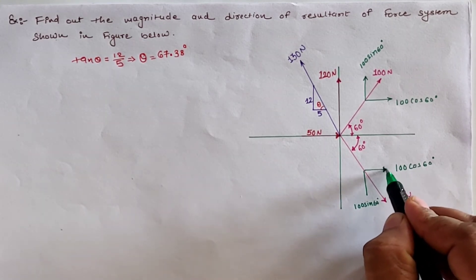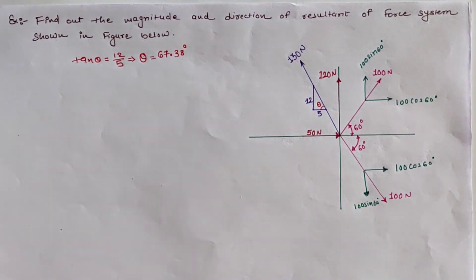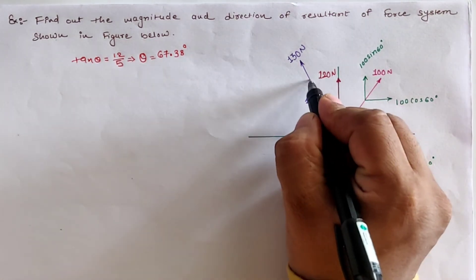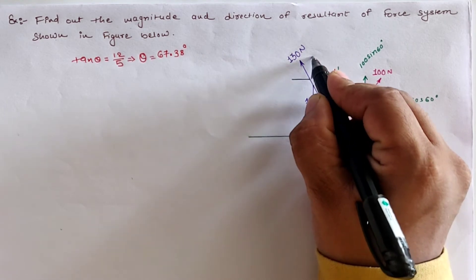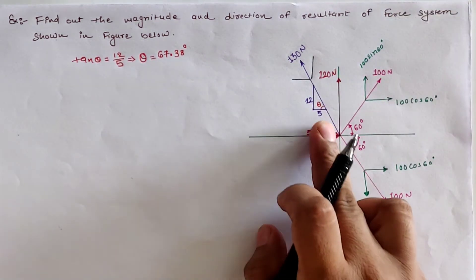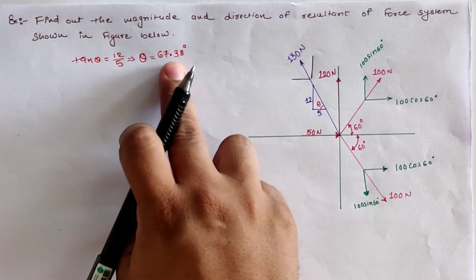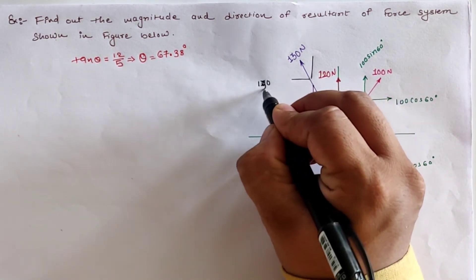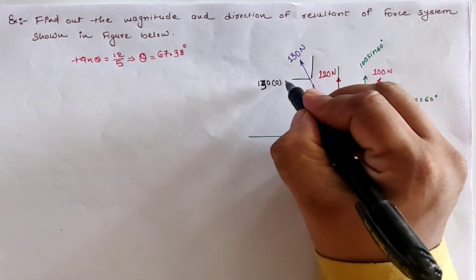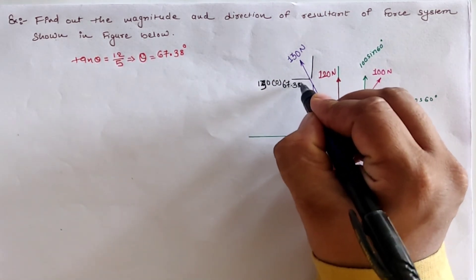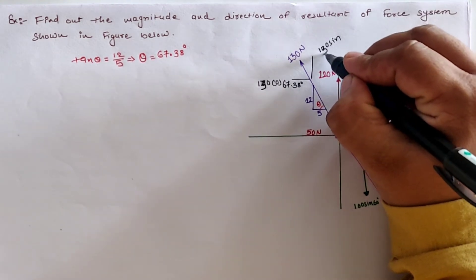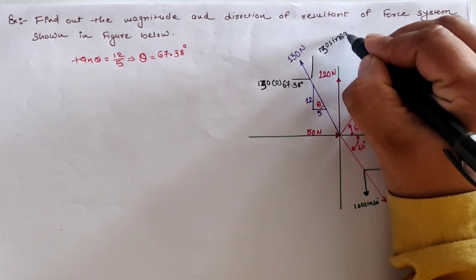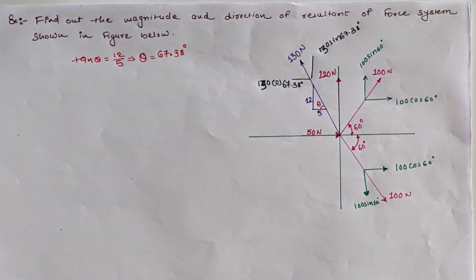For the 130 newton load, drawing the perpendicular resolved forces with the angle of 67.38 degrees with the horizontal: the horizontal component is 130 cos 67.38 degrees and the vertical component is 130 sin 67.38 degrees. Since this force is also directed outward, both components are in the outward direction.